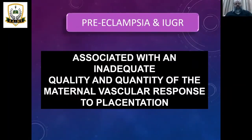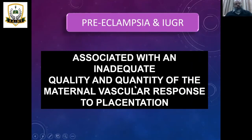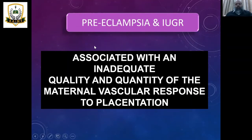Pre-eclampsia and IUGR are associated with an inadequate quality and quantity of the maternal vascular response to placentation. When the placenta demands vascularity, the proper quantity and quality of blood is not supplied by the maternal vascular system, which can result in inadequacy, leading to pre-eclampsia and ultimately IUGR.